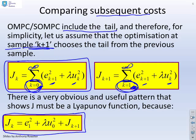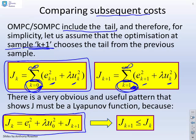And what does that tell me? It tells me that J_{k+1} must be less than or equal to J_k. And that's useful because J is made of a sum of squares. It's bounded, and it's also monotonically decreasing, and therefore it must be a Lyapunov function.